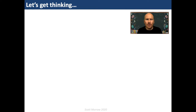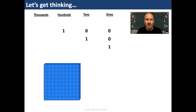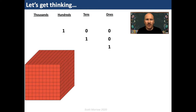Before we put those numbers in the correct order, we're going to have a think about our number system. We're going to write headings for the first four places: thousands, hundreds, tens and ones. We're going to use base ten materials to help us visualise numbers. This is a one. This is a ten — one and then a zero, because we have one ten and no ones. This is a hundred — one zero zero, because we have one hundred, no tens and no ones. This is a thousand — one zero zero zero, because we have one thousand, no hundreds, no tens and no ones.